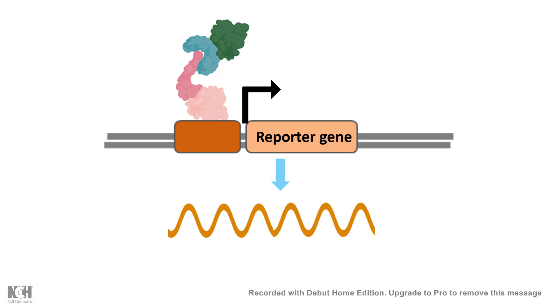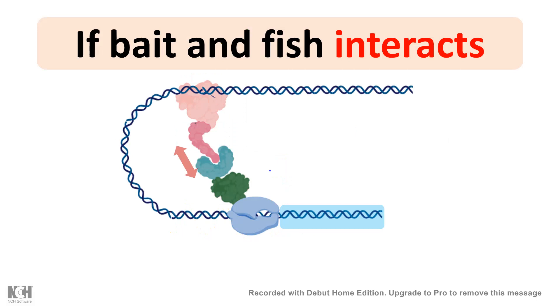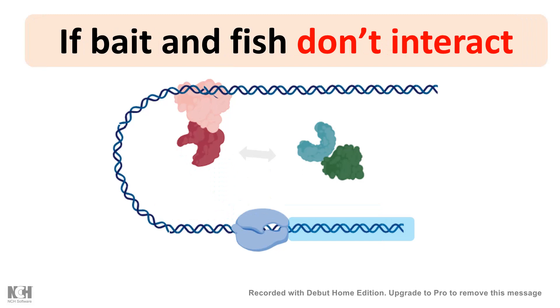Now if the bait and fish plasmid interacts so definitely the target gene would be transcribed in this case it's a reporter gene. If they don't interact the target gene won't be transcribed.